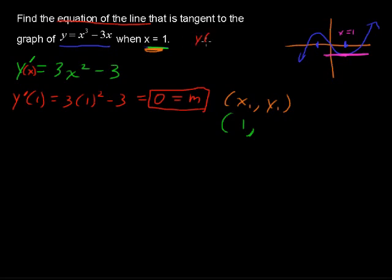That's y of 1 equals 1 to the third minus 3 times 1. So, y of 1 equals 1 minus 3 is negative 2. So we've got a negative 2 here.